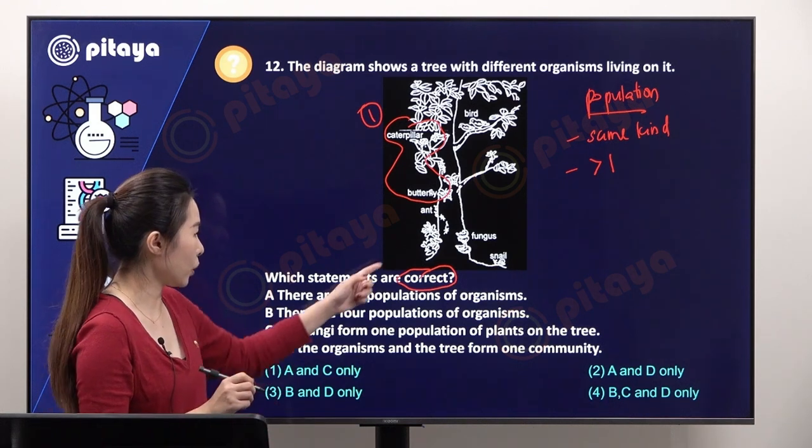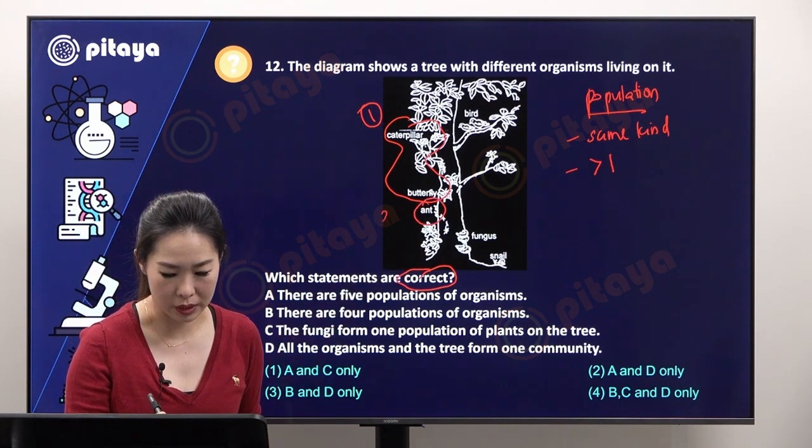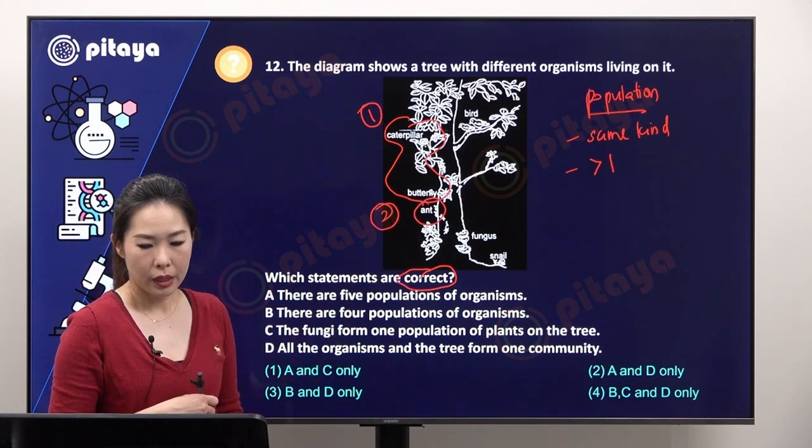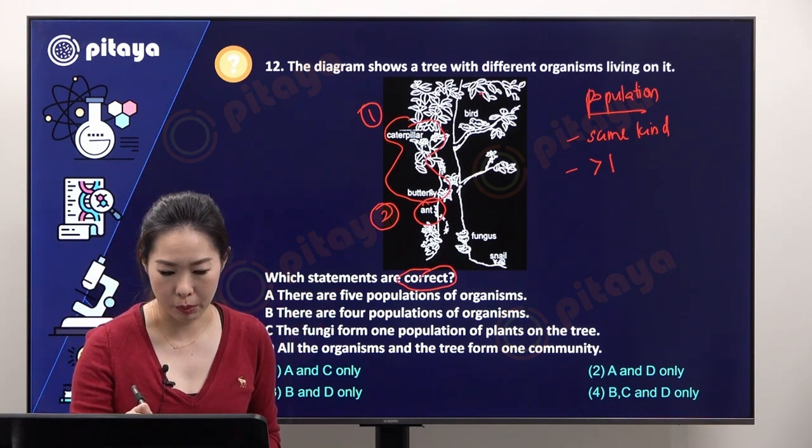We have definitely more than one ant shown in the picture here. It should give us the second population. Bird-wise, we have two birds, so definitely another population.